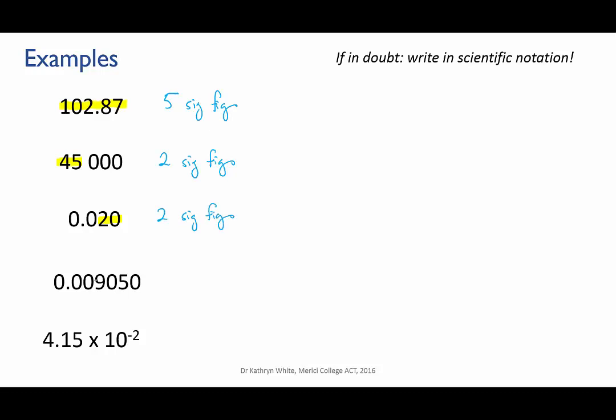0.009050. This is much like the last one. Start counting the sig figs at the 9, which is the first non-zero digit, and that gives us four sig figs in total.